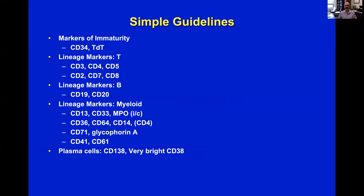For simple guidelines on all these markers, one easy way to remember is this: markers of immaturity — if a population is positive for CD34 and/or TDT, you can be sure it is an immature cell population, and if it's a tumor you'll need terms like 'acute' or 'blast' in your diagnosis. The converse is not true: there can be many immature tumor populations that don't express CD34 or TDT, so you cannot conclude that absence means a mature process.